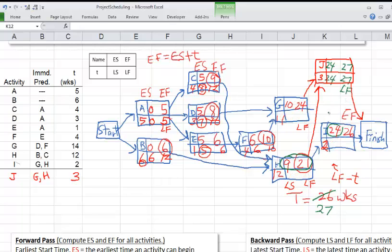And now I will also have the LF of 27, and 27 minus 2 is 25. And then H is going to be pointing to both J and I, and here we have 24 and 25. So the smaller number will be written here, and here the same thing, 24. So 24.